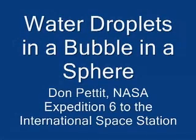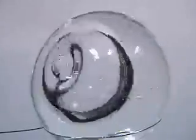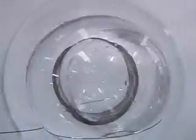Water droplets in a bubble in a sphere. Here we have a sphere of water 75 millimeters in diameter with an air bubble inside about 35 millimeters in diameter and we inject water droplets